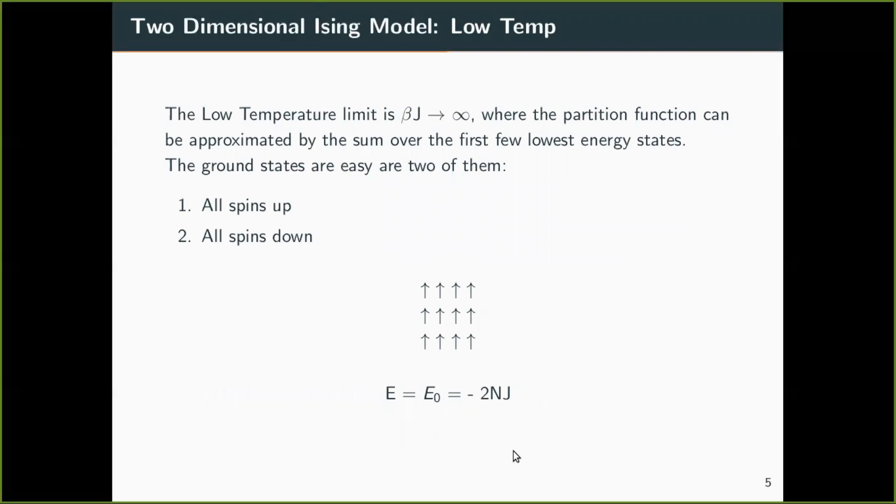Now we'll switch on to the two-dimensional Ising model. So I have split two-dimensional Ising model in low temperature limit and high temperature. So for simplicity, I have set B equal to zero.